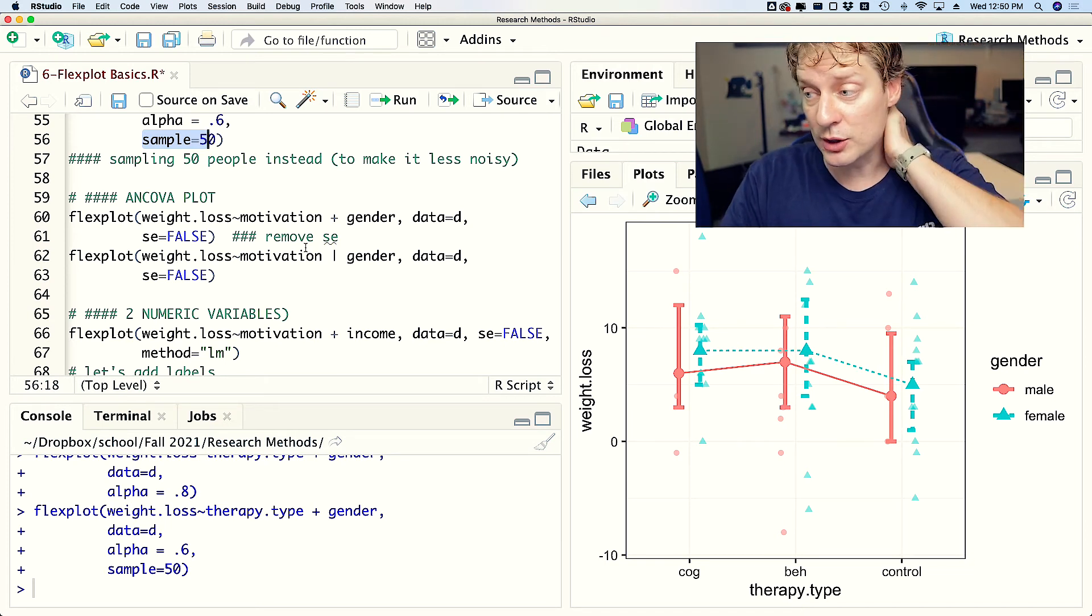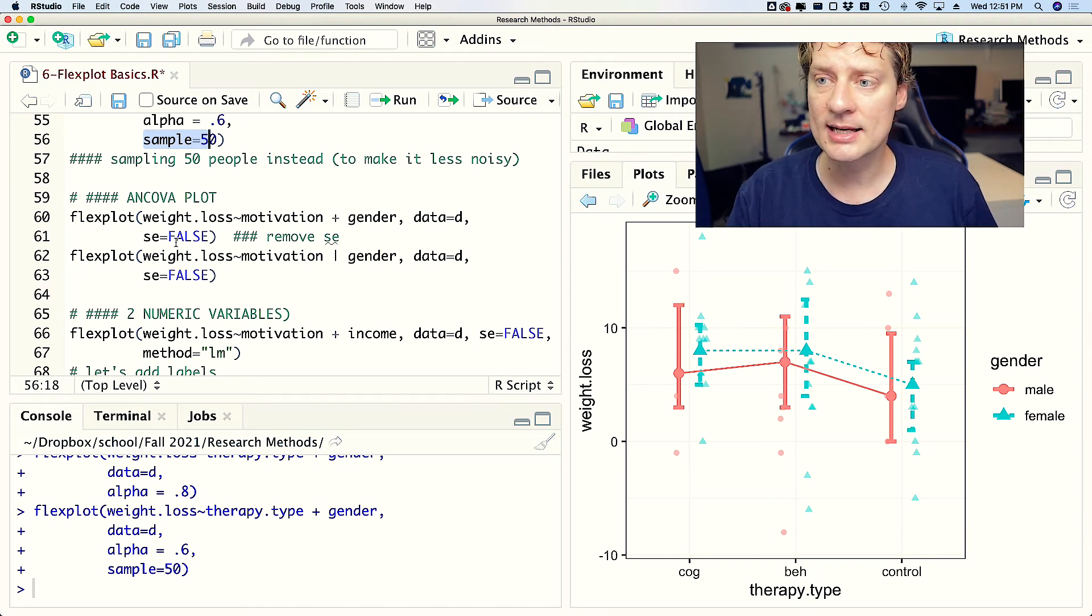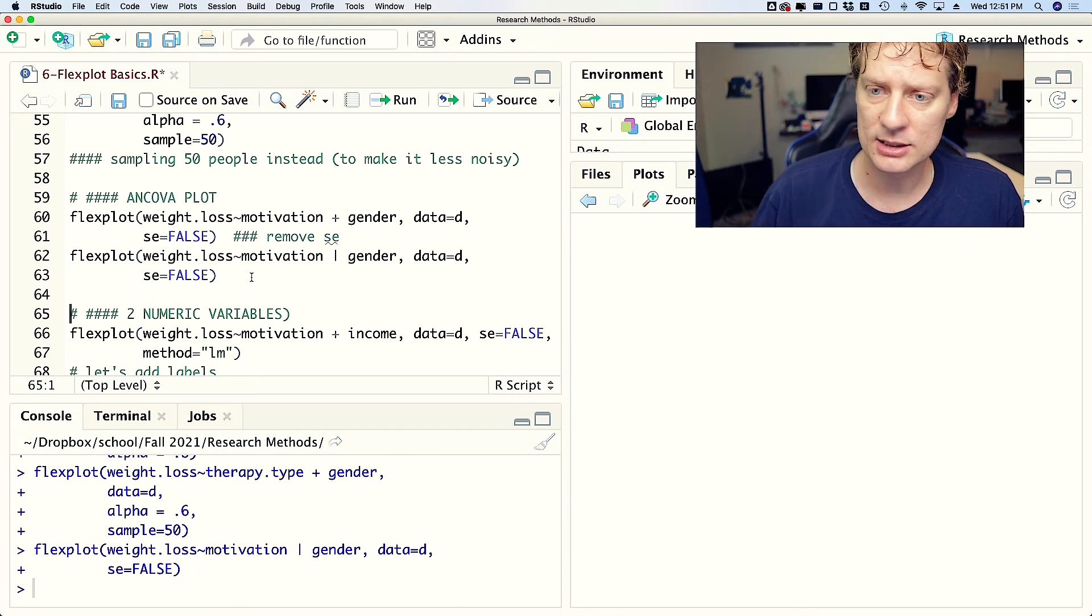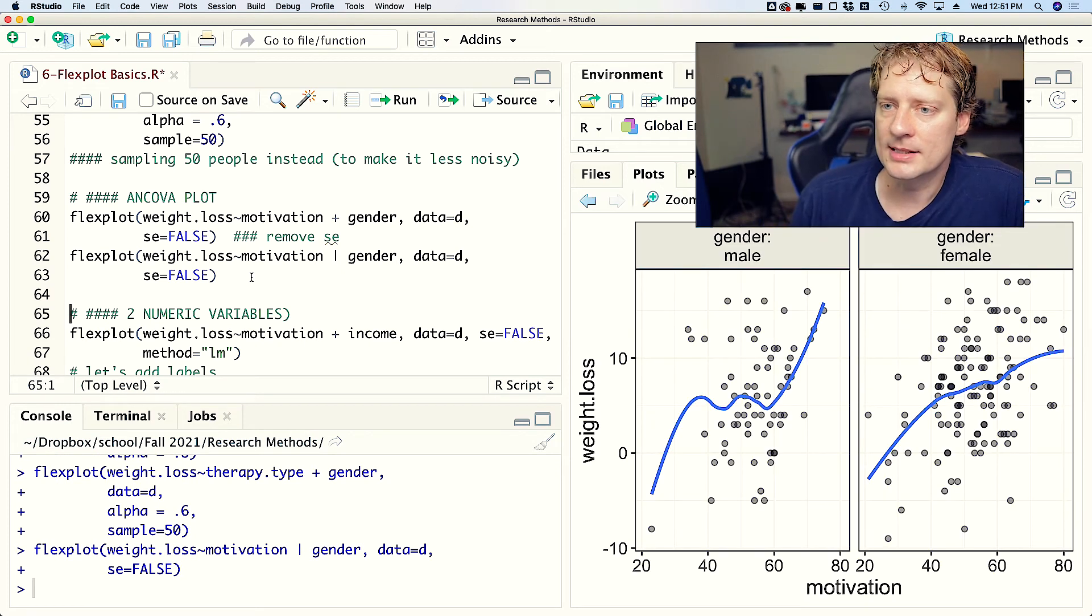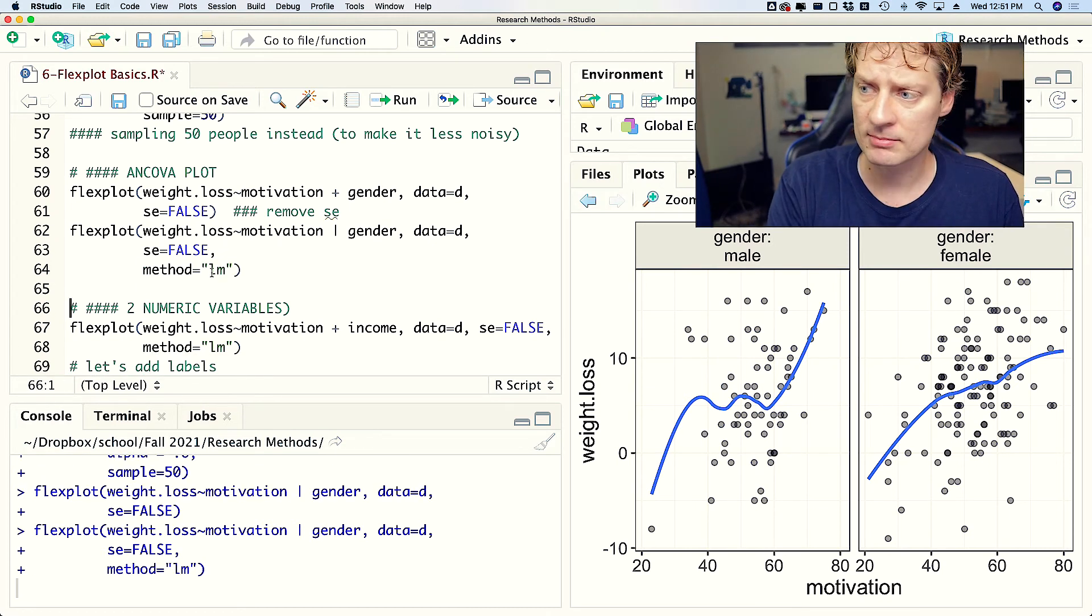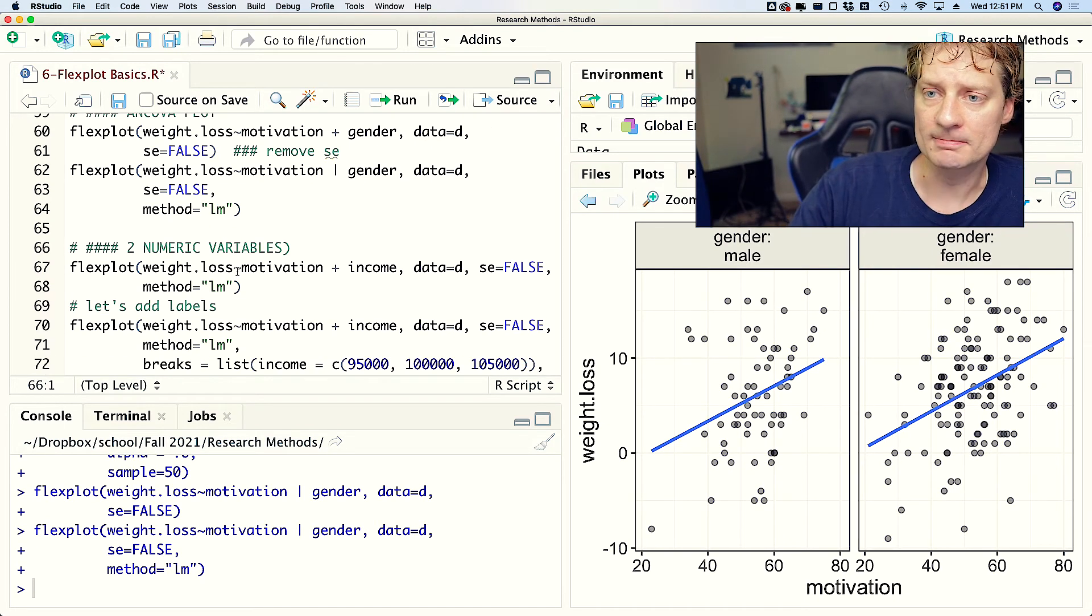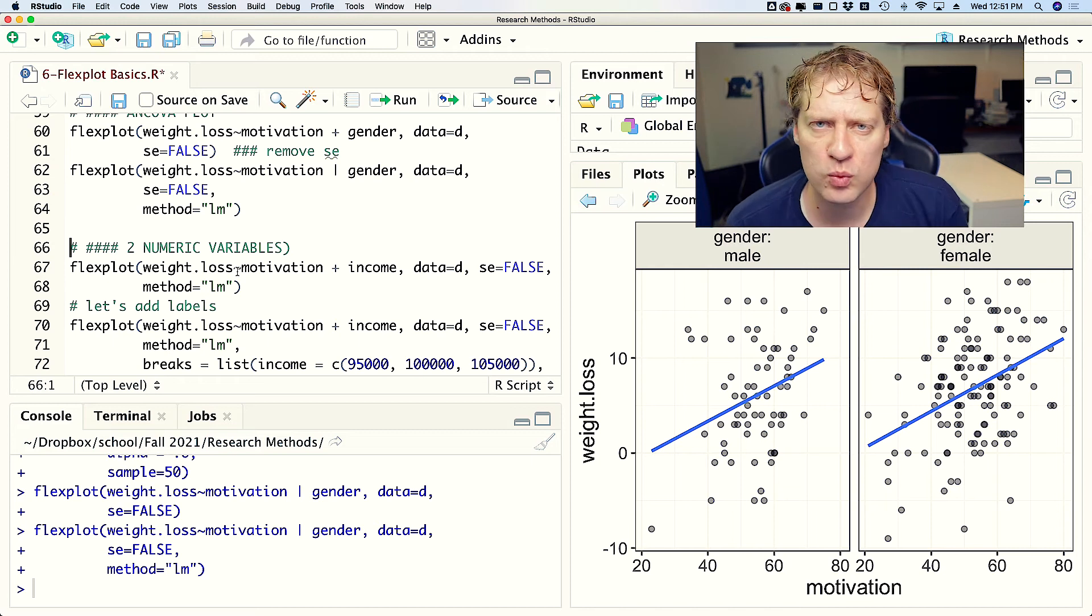So that's one way you can do an ANCOVA plot or an interaction plot, by putting that second variable as a separate color, line, and symbol. Another way you could do it is by separating it into panels. And so here we've got motivation on the x-axis, and in separate panels we've got the genders, and that may be a little clearer to see. We might want to put method equals LM to look at the straight lines.